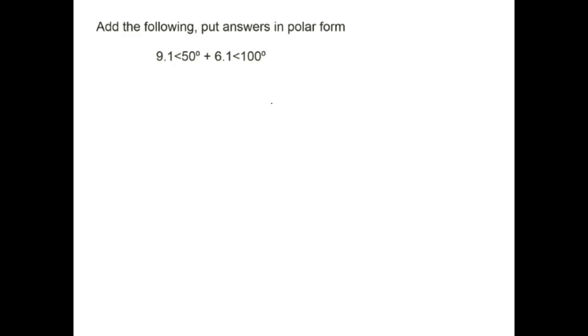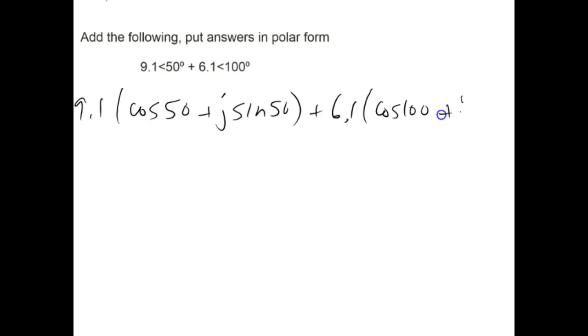So let's put these in rectangular form first. We would say 9.1 cosine 50 plus j sine 50 plus 6.1 cosine 100 plus j sine 100.